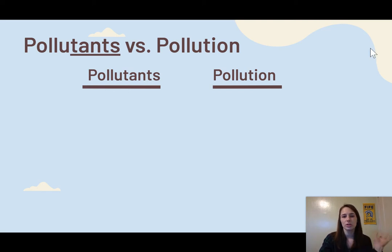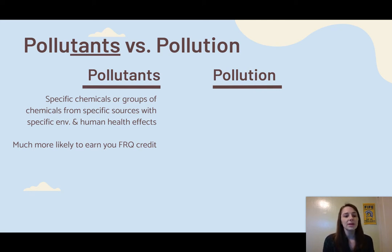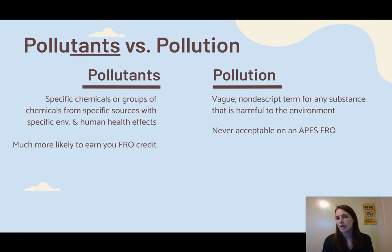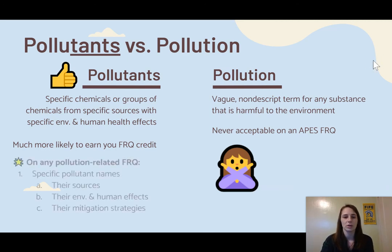Now let's give a little FRQ tip, specifically with the idea of pollutants versus pollution. Pollutants are the specific chemicals or groups of chemicals from specific sources with specific environmental and human health impacts. These are going to be much more likely to earn you FRQ credit. If you just say 'pollution,' that's a really vague, nondescript term for any substance that could be harmful to the environment, and you aren't going to get points for that on an AP Environmental Science FRQ. You need to be very specific about the exact pollutant and specifically why it is harmful.